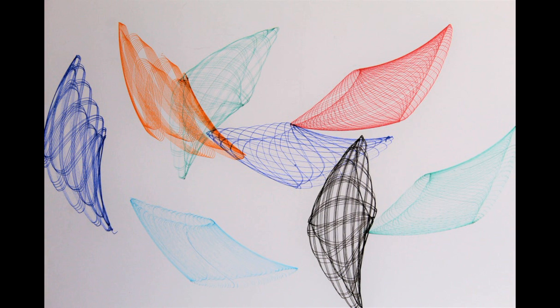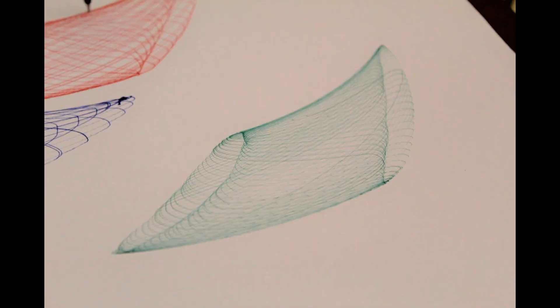Now, simply sit back and enjoy the Arduino powered pattern making machine work its magic. Each pattern takes approximately 5 to 10 minutes to complete. Once you are satisfied with the result, gently raise the pen off the paper and switch off the machine.